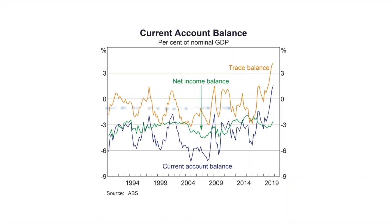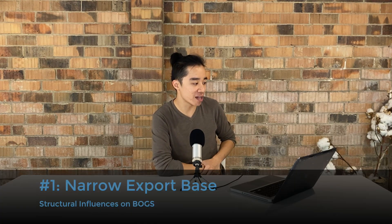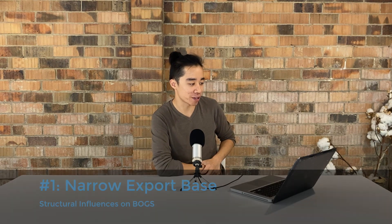But if you try to observe a long-term trend, you would deduce that BOGS spends more time in deficit than in surplus — we generally spend more on imports than we earn on exports. This suggests there are some long-term or structural influences we should understand. The first structural influence that explains a long-term deficit is that we have a narrow export base.